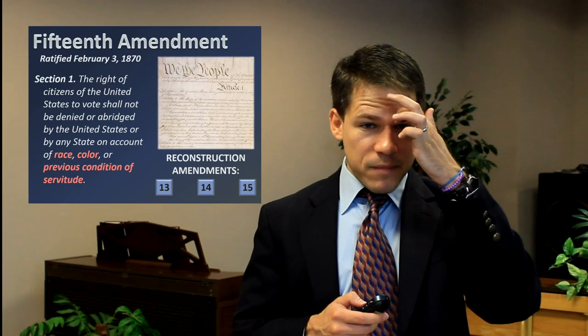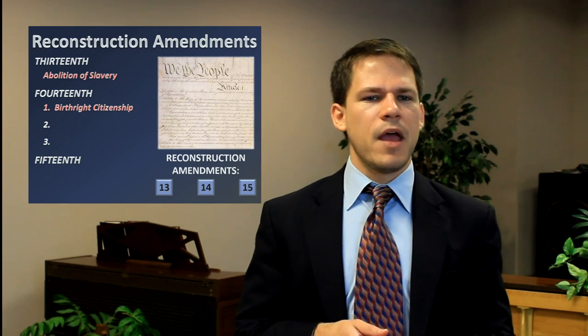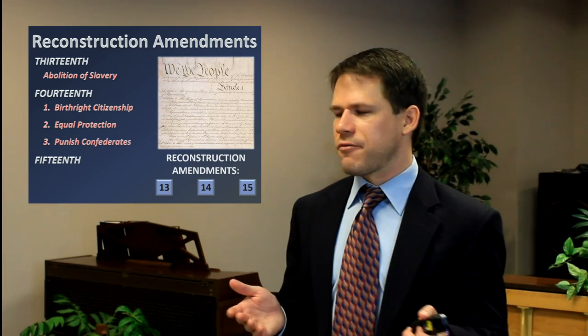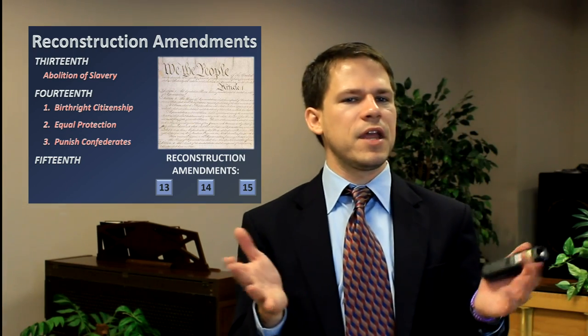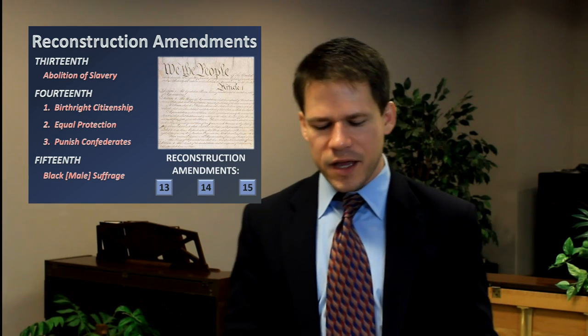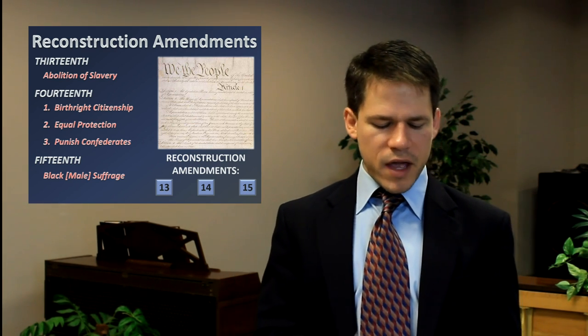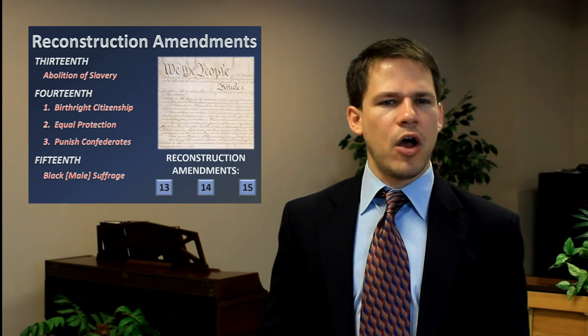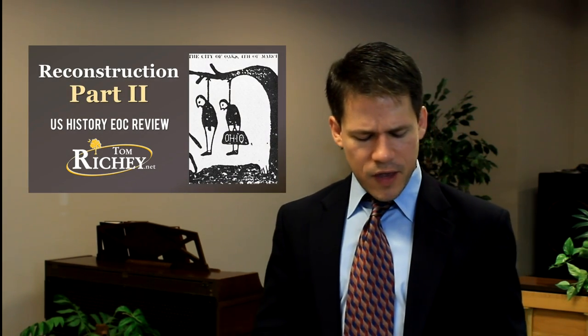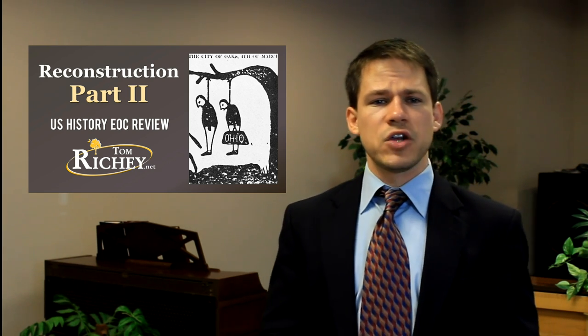The 14th Amendment covers birthright citizenship, equal protection of the laws, and several provisions to punish Confederates. The 15th Amendment addresses black male suffrage — it says that someone cannot be denied the right to vote because of race, color, or previous condition of servitude. There were other reasons the Supreme Court at the time still allowed states to deny the vote, but that's covered in Standard 3.4, which we'll take a look at next.